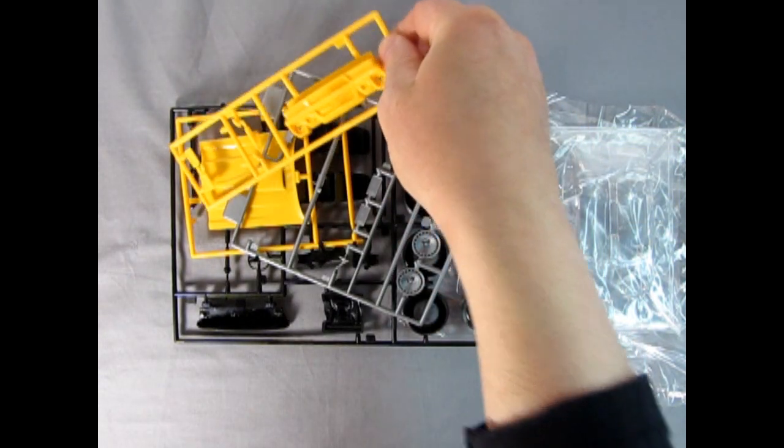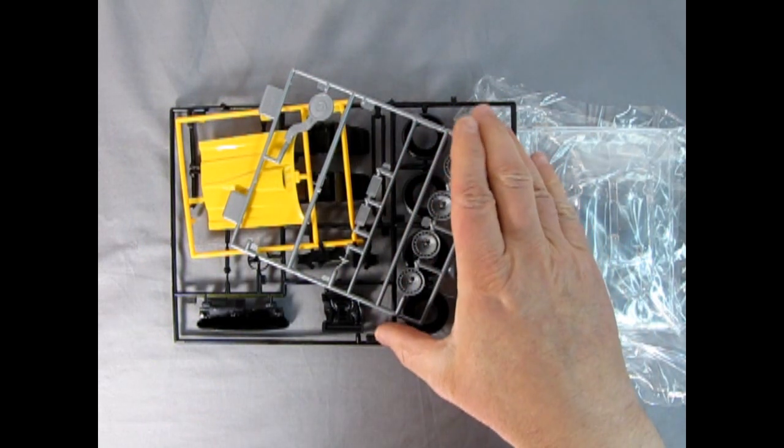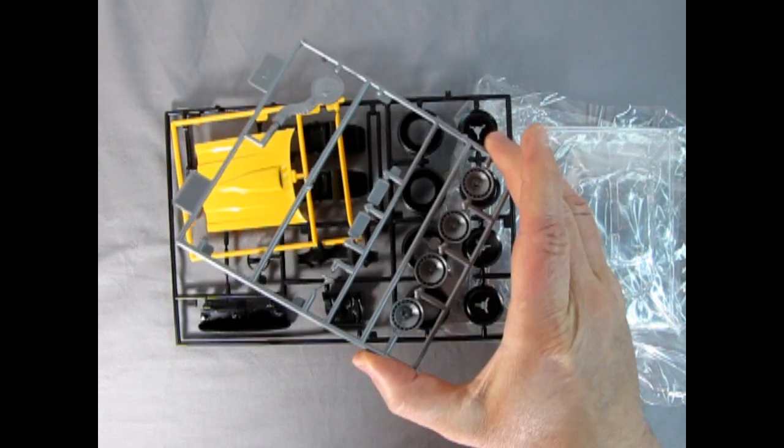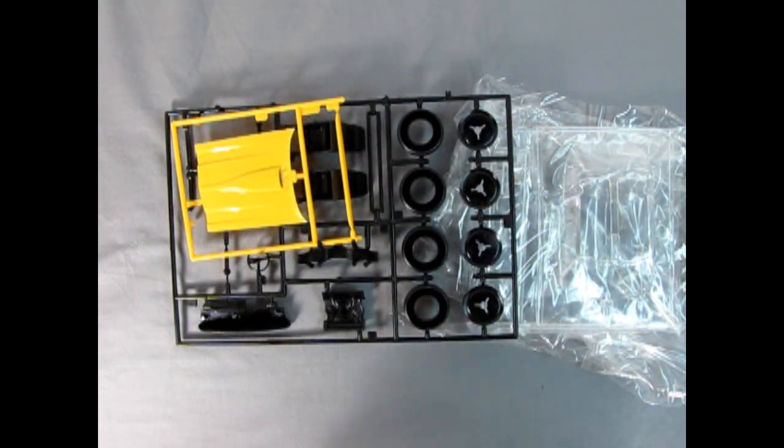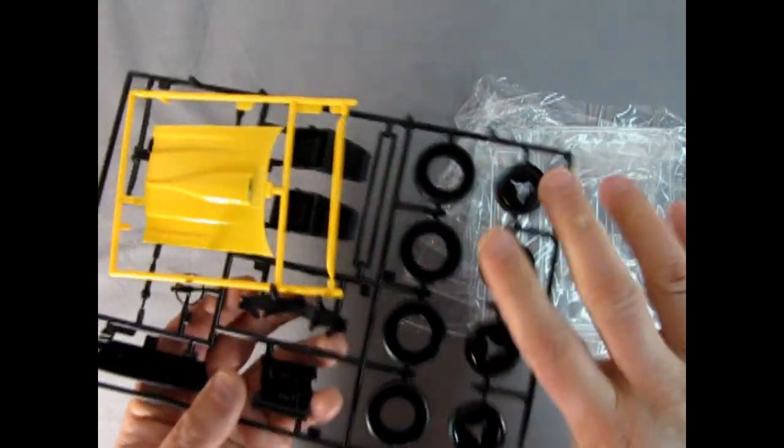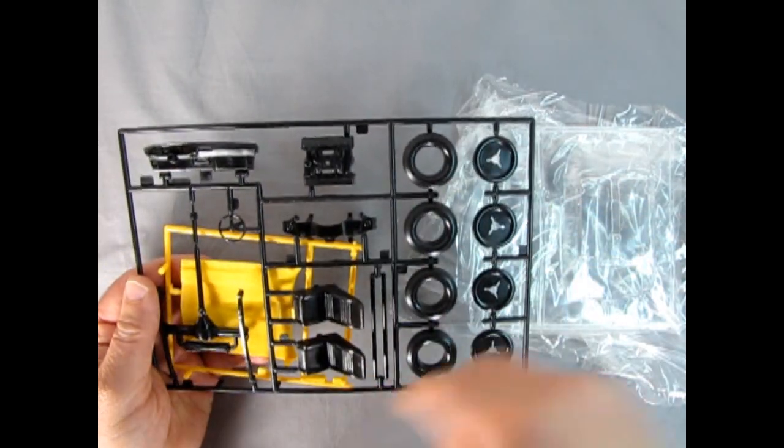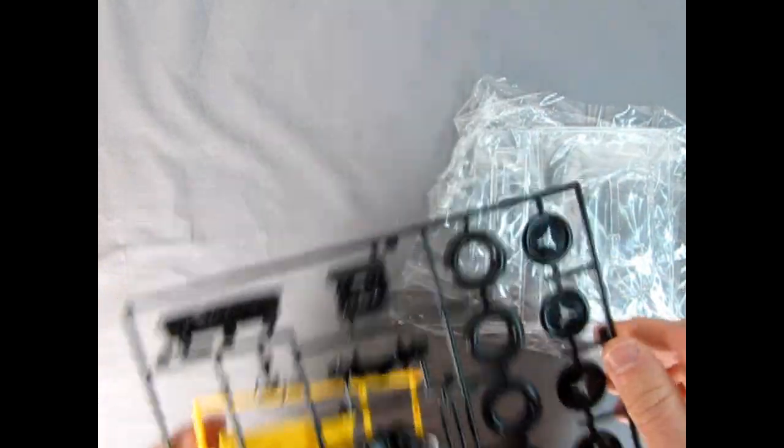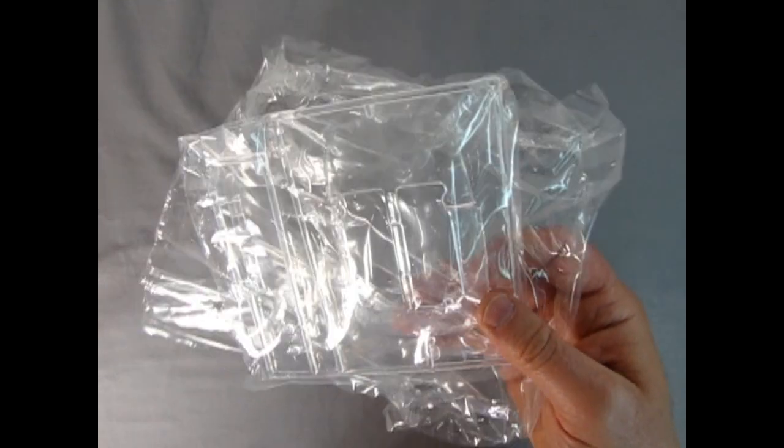There we've got our front nose on this part sprue. There is no chrome but there is this sort of aluminum colored plastic that we have. There is the hood and the rest of the black components with of course our really cool wheels on here. Back in black once again. And then we have our clear components in this bag. So let's take a look at the instructions with Danny the dog.